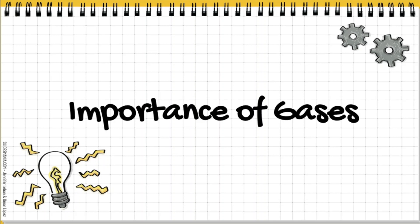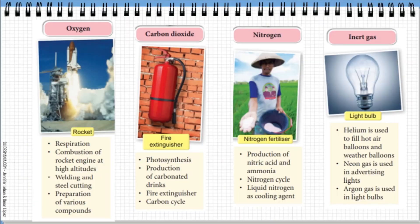The final part of this video covers the importance of gases — oxygen, carbon dioxide, nitrogen, and inert gases. Oxygen is used for respiration by all living organisms, and is also used in rockets, welding and steel cutting, and for the preparation of various compounds. Carbon dioxide is used in the production of carbonated drinks, in fire extinguishers, and by plants for photosynthesis.